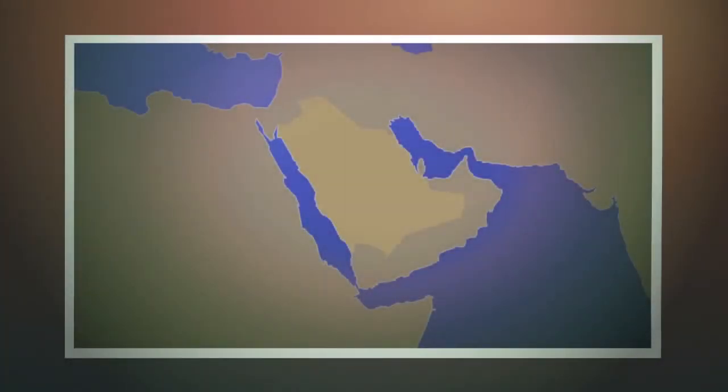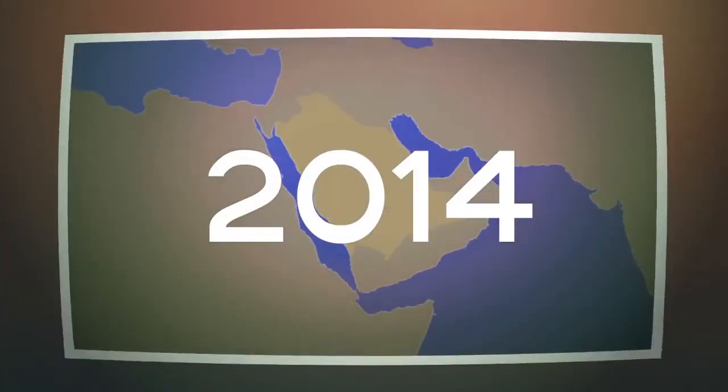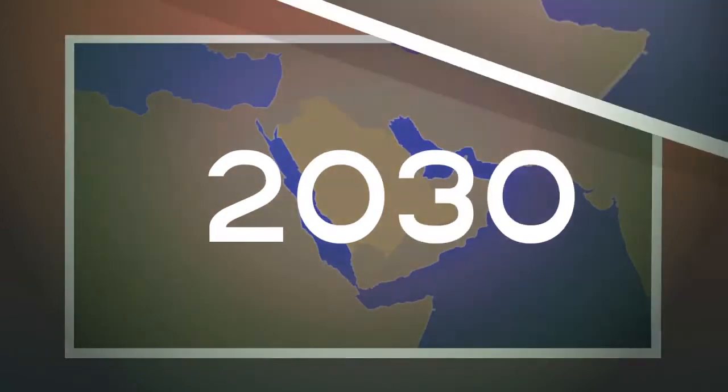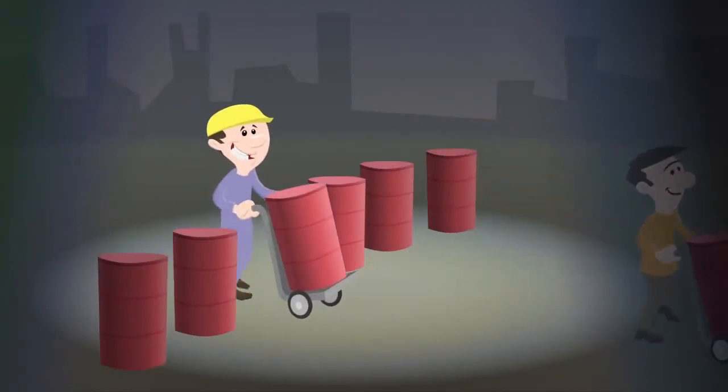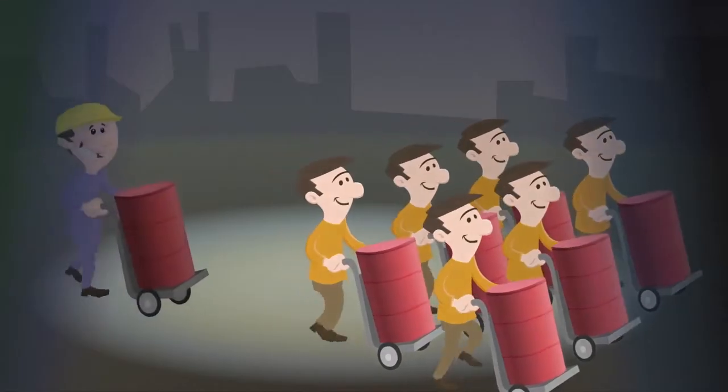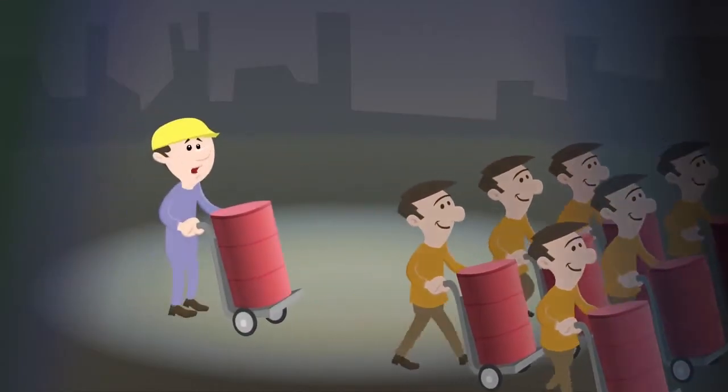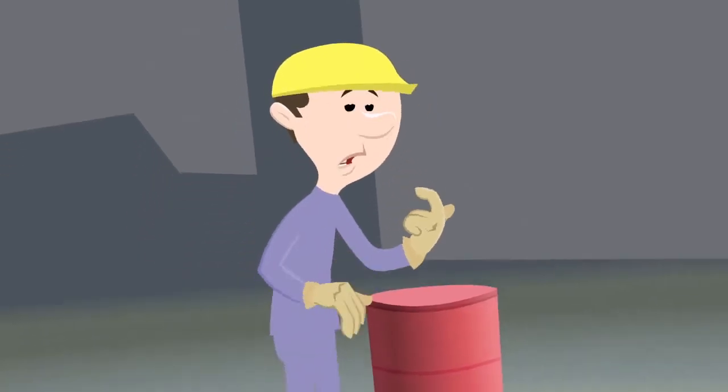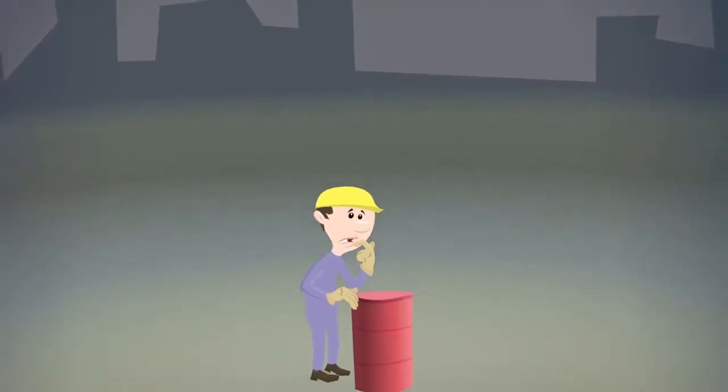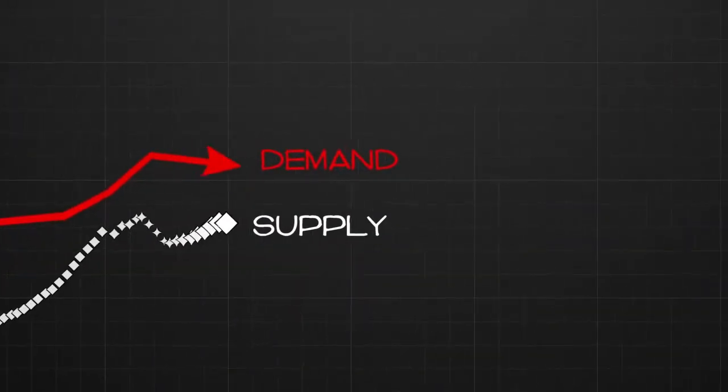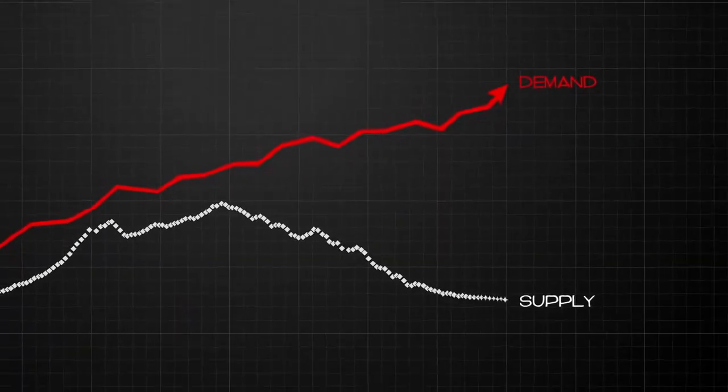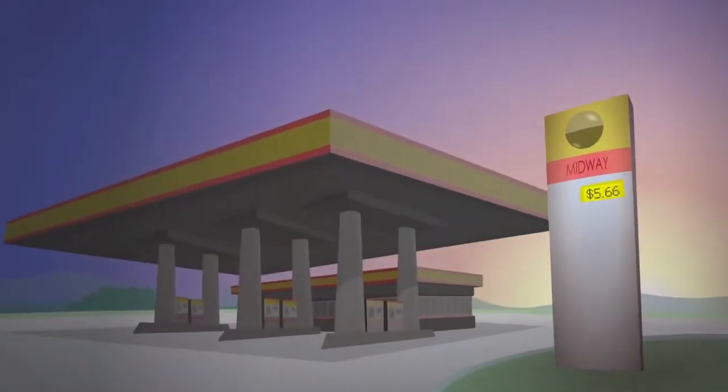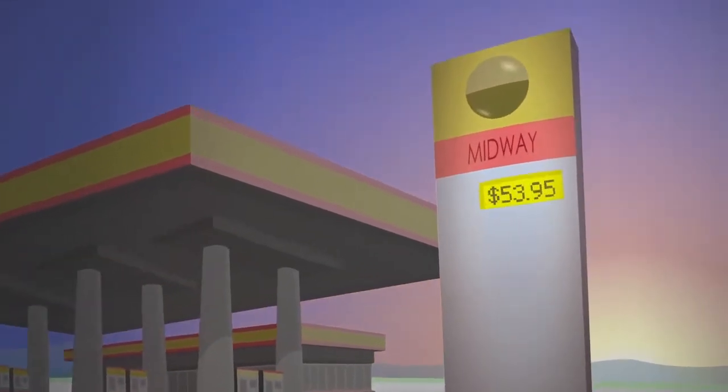The world will need to bring the equivalent of a new Saudi Arabia into production every three years to make up for declining output in existing oil fields. In the 1960s, six barrels of oil were found for every one that was used. Four decades later, the world consumes between three and six barrels of oil for every one that it finds. Once the peak of world oil production is reached, demand for oil will outstrip supply, and the price of gasoline will fluctuate wildly, affecting far more than the cost of filling a car.